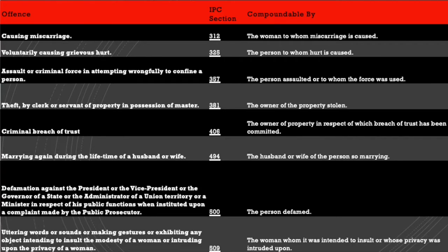Compoundable offenses where it is necessary to inform the court include: causing miscarriage; voluntarily causing grievous hurt; assault or criminal force in attempting wrongfully to confine a person; theft by a clerk or servant of property in possession of a master; criminal breach of trust; marrying again during the lifetime of a husband or wife; defamation against the President, Vice President, Governor of a state, administrator of a union territory, or a minister in respect of his public functions when instituted upon a complaint made by the public prosecutor; and uttering words, sounds, or making gestures or exhibiting any object intending to insult the modesty of a woman or intruding upon the privacy of a woman.